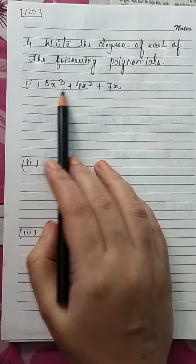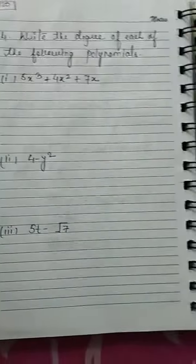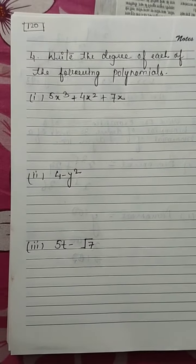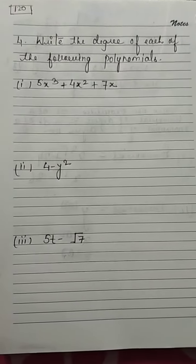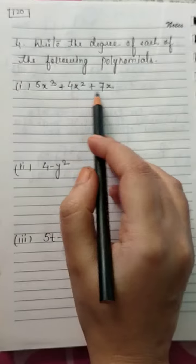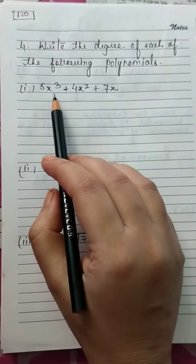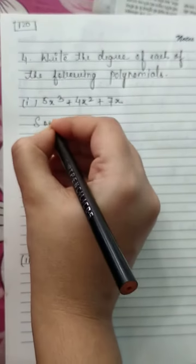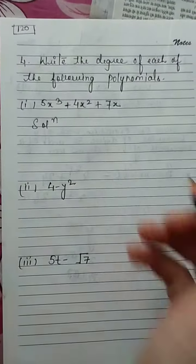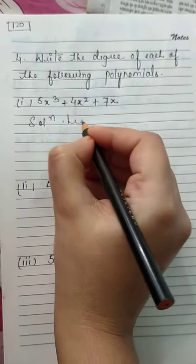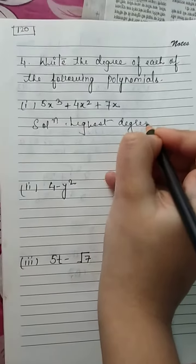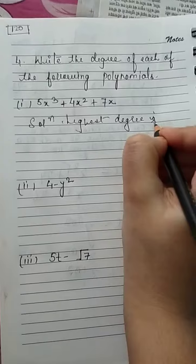You can see question number 1: 5x³ plus 4x² plus 7x. Here the highest degree is 3, so the highest degree is 3.